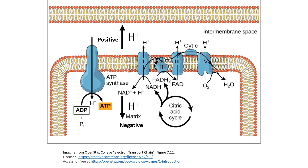Two, the matrix has a slight negative charge, meaning it pulls positively charged ions like hydrogen ions towards it. So for these two reasons, hydrogen ions want to move from the intermembrane space back into the matrix, but they can't, because the inner membrane is made up largely of non-polar fatty acids which reject positively charged ions like hydrogen ions.